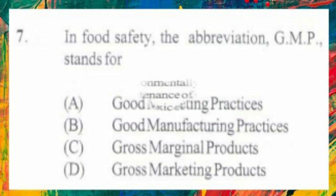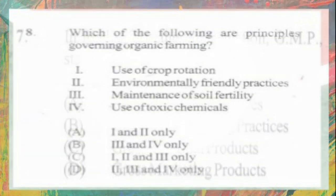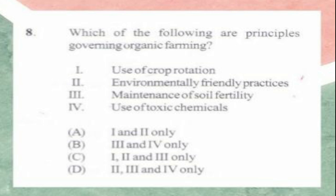Question number 8. Which of the following are principles governing organic farming? 1. Use of crop rotation, 2. Environmentally friendly practices, 3. Maintaining of soil fertility, 4. Use of toxic chemicals. A. 1 and 2 only, B. 3 and 4 only, C. 1, 2 and 3 only, D. 2, 3 and 4. The answer is C, 1, 2 and 3 only.